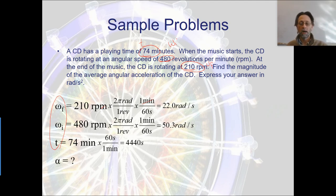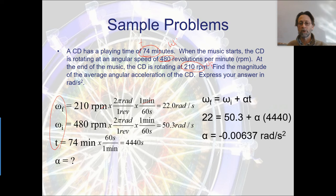Oh, yes, it's going to be that one. Omega f equals omega i plus alpha T. So plug in our values 22, 50.3 and 4440. And when you solve, that means that the CD is slowing down because it doesn't need to read it as fast because as it's spinning, the reader is moving in towards the center, which means that it's covering a smaller linear distance so the CD can slow down so that it's not reading it too fast.